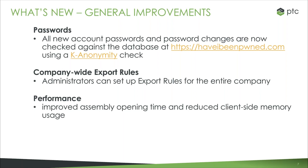We have also added company-wide export rules for professional and enterprise level subscriptions. Before, we released the ability to do export rules just on an individual user level, and now we've been able to promote it to company-wide. What the export rules allow you to do is add a prefix or a suffix to your file name whenever you're exporting to certain file types, and you can choose what file types you want to apply the rule to. A lot of people add their revision or some other custom property in with the file name. We've also made some improved assembly performance — improved the assembly opening time as well as reduced the client-side memory usage required when opening assemblies.